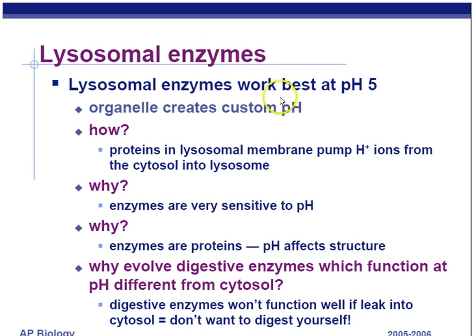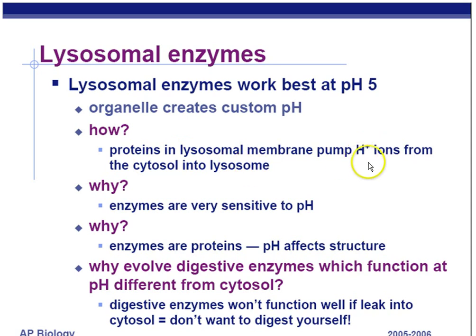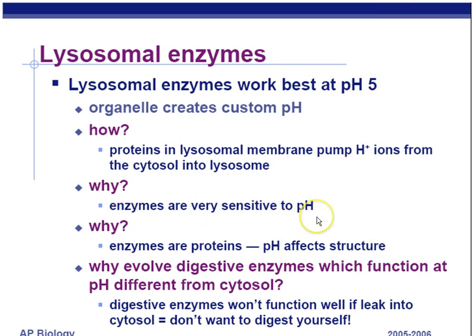Lysosomal enzymes work best at a pH of 5 in acidic environments. The proteins in the lysosomal membranes pump hydrogen ions from the cytosol into the lysosome. When you get extra hydrogen ions, that makes something an acid, so the lysosome is able to pump hydrogen ions inside by active transport to make it more acidic. Enzymes are very sensitive to pH — it affects the tertiary structure of a protein. The hydrolytic enzymes inside the lysosome only fold correctly and are only active in an acidic environment.